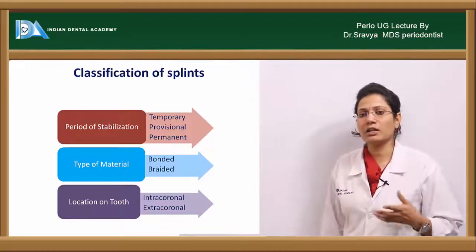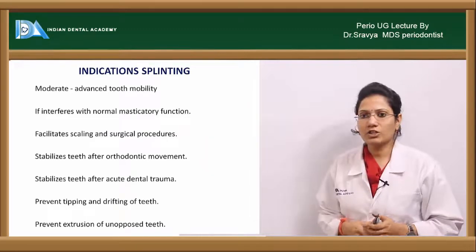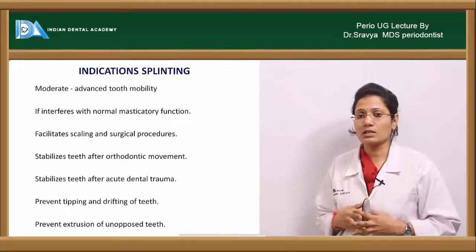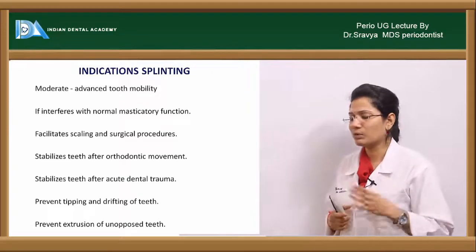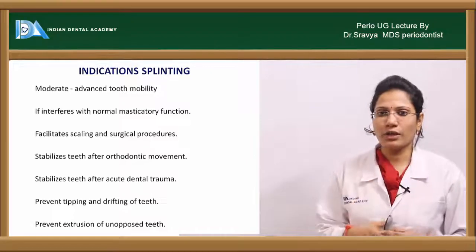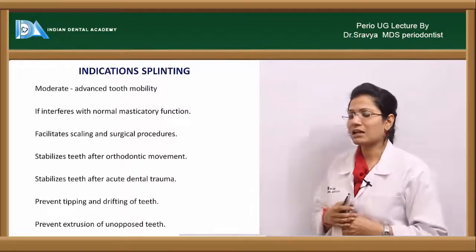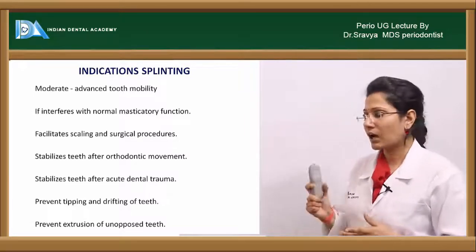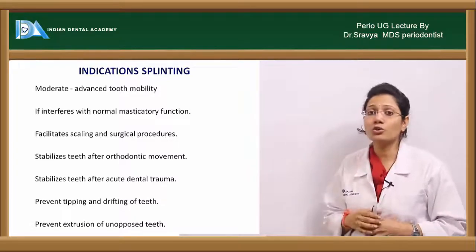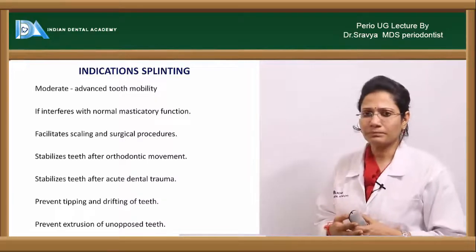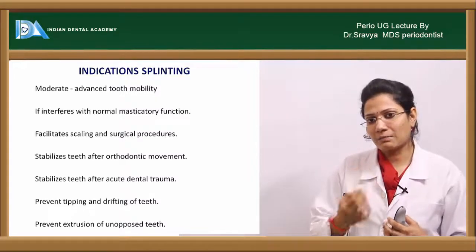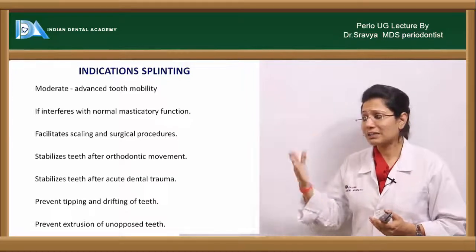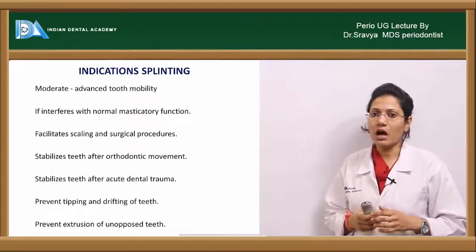Fixed partial dentures also act as splints. Indications for splinting include moderate to advanced tooth mobility, especially grade 2, when it interferes with normal masticatory function. Splinting facilitates scaling and root planing procedures and even surgical procedures. Other indications include stabilizing teeth after orthodontic movement, stabilizing teeth after acute dental trauma such as avulsion, preventing tipping and drifting of teeth, and preventing extrusion of unopposed teeth.